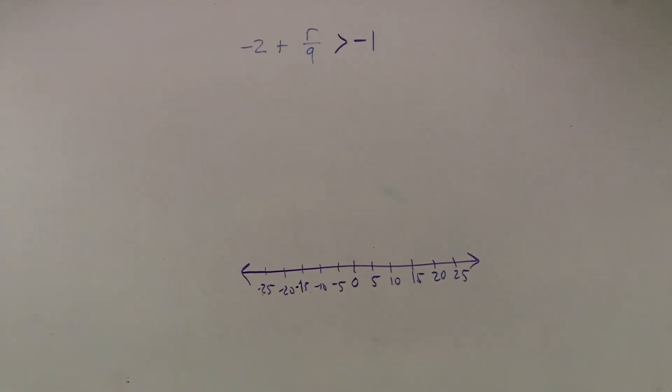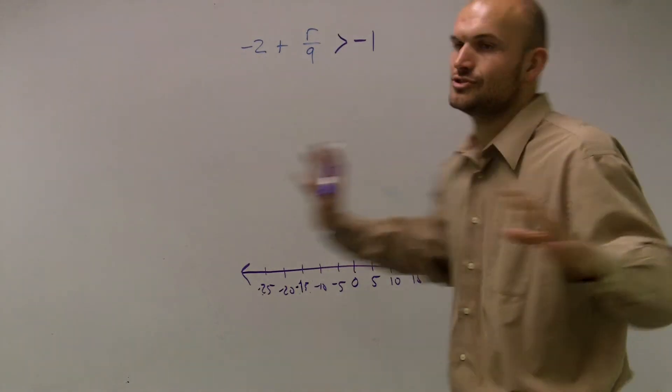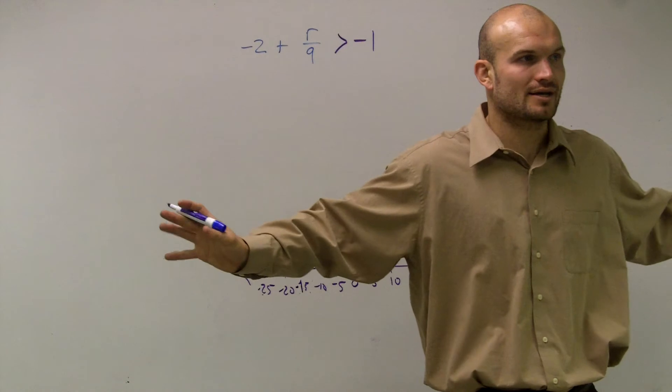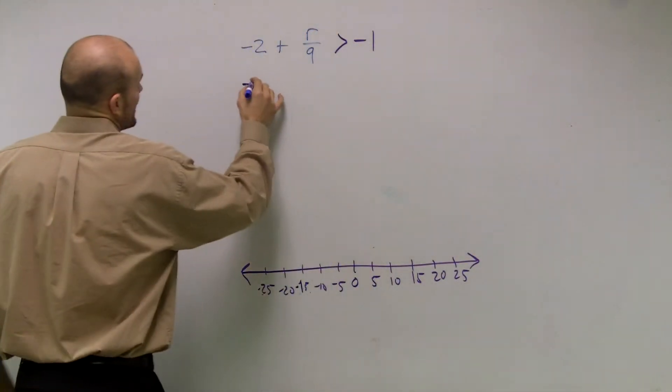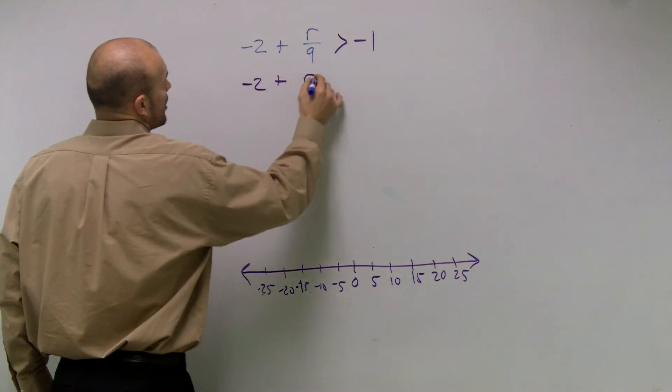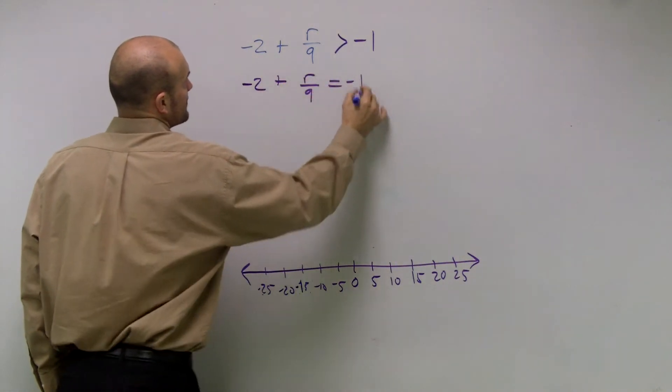So the problem says negative 2 plus r over 9 is greater than negative 1. So when you guys are doing these problems, please just forget about it's an inequality and just write it as an equation and remember your steps for equations. So negative 2 plus r over 9 equals negative 1.